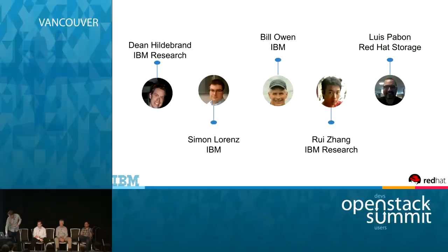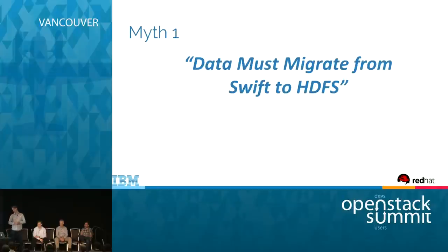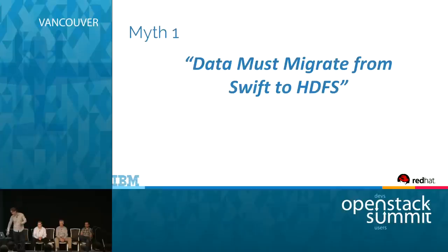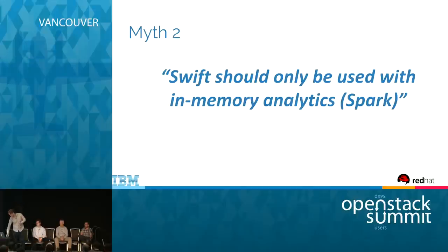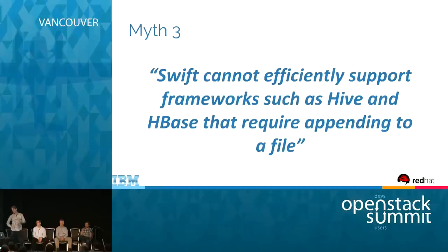The first myth is that when you want to run analytics on HDFS with Hadoop, you have to first create the data, migrate it into HDFS, run your analytics, and possibly migrate it out. We want to show that is not needed. The second myth we want to dispel is that Swift is only good when you're not putting a high IO load on the system. In systems like Spark, you ingest the data and then run everything in memory, so you're not putting a high IO load after that. We don't believe that's the case either.